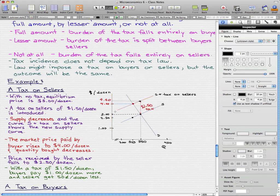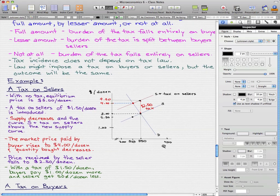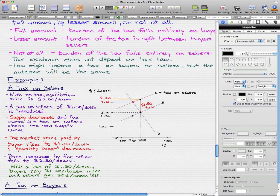We'll draw a line marking that. The market price paid by buyers rises to $4.50 a dozen, and the quantity bought decreased from 3.50 to 3.25. We'll draw another line here to reflect that.